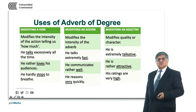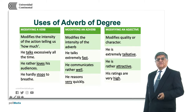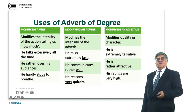An adjective can also be modified by an adverb of degree. He is extremely talkative. He is rather attractive. His ratings are very high. Talkative, attractive, and high are adjectives, and extremely, rather, and very are the adverbs of degree.